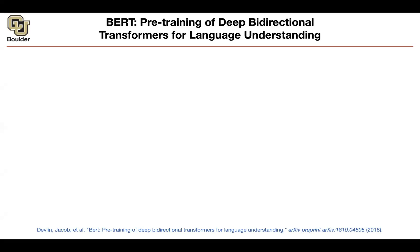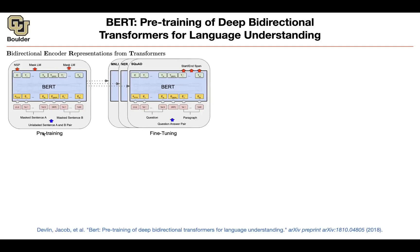We are going to continue with BERT — Bidirectional Encoder Representations from Transformers. A key point here is bidirectionality and the use of transformers. We are going to use the encoder part of the transformer rather than the decoder. The big picture is still pre-training and then fine-tuning on your task. Pre-training is unsupervised; fine-tuning is supervised and depends on whatever task you want to do — named entity recognition, question answering, natural language inference, sentiment analysis.